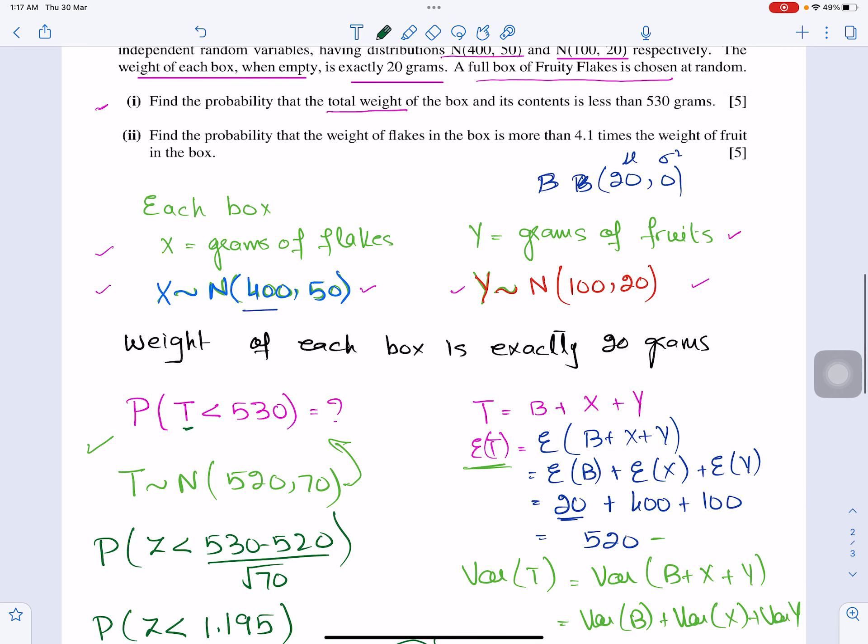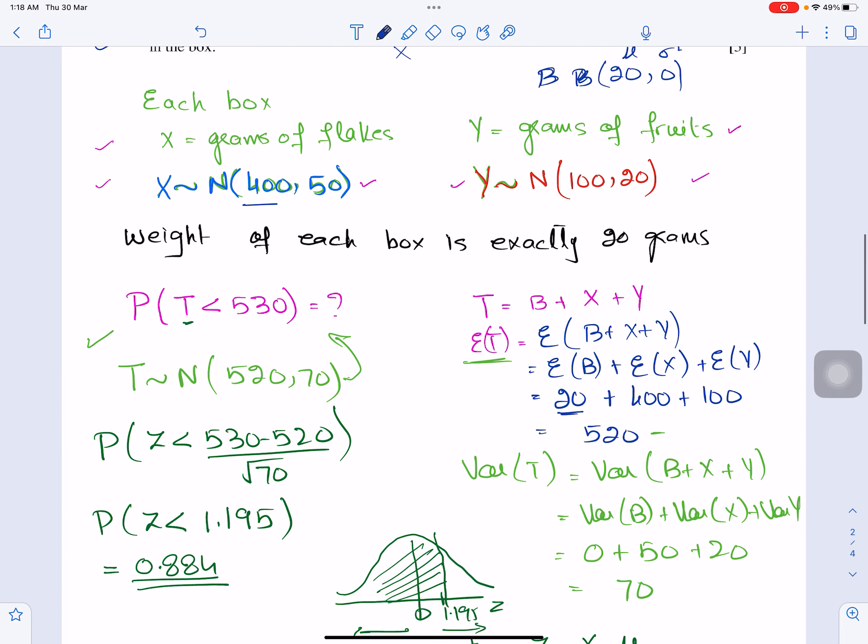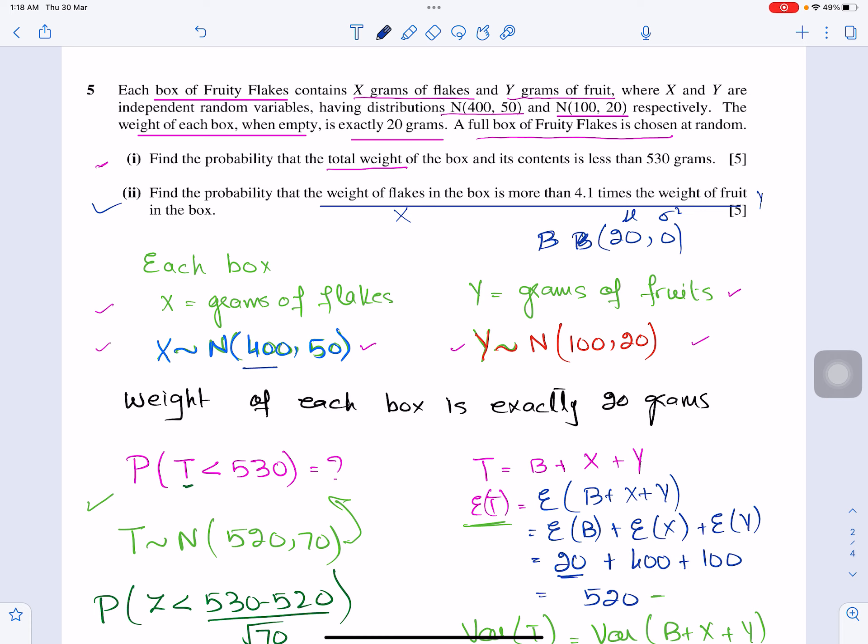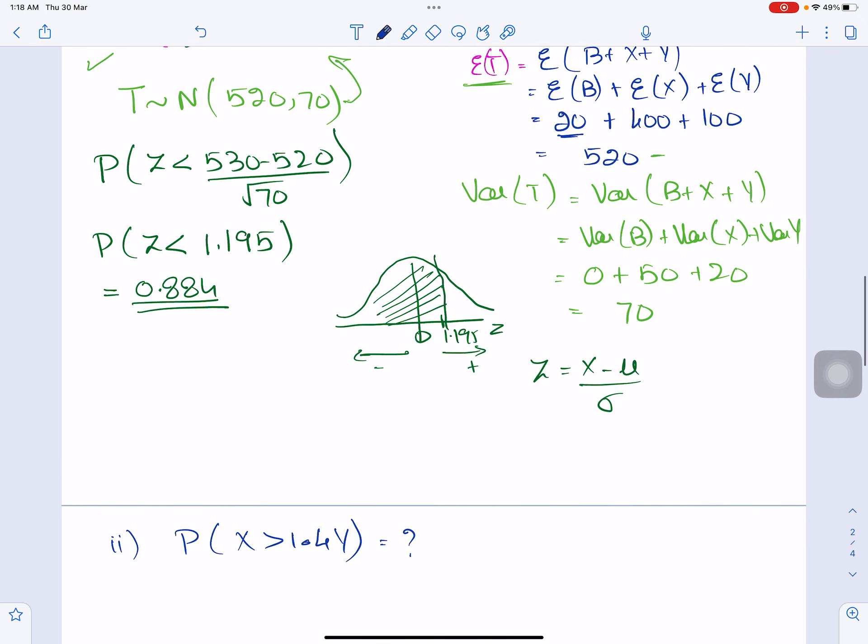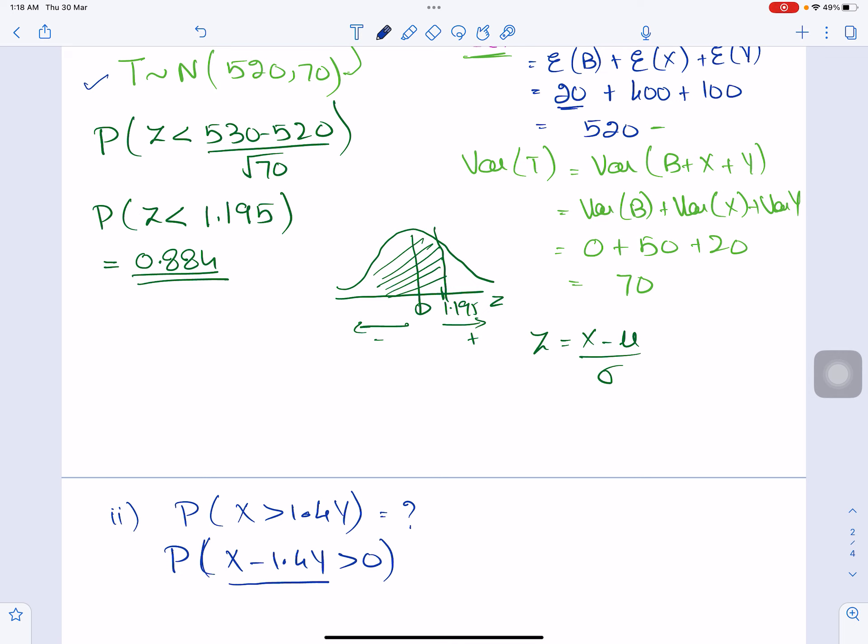Now part 2 of the question is saying find the probability that the weight of flakes in the box is more than 1.4 times the weight of the fruit. So flakes I represented by x, fruits I represented by y, so this means now I have to find out for part 2, probability of x greater than 1.4 times y. Let me show you this question again. The weight of flakes in the box is more than 1.4 times the weight of the fruit. So I got this inequality here, but what does it mean if I bring it all to one side. I now need to find out the normal distribution for this, like I found out here for T for the total weight.